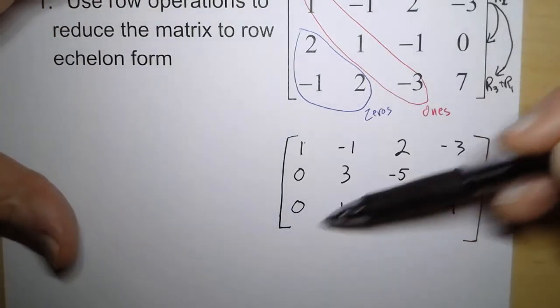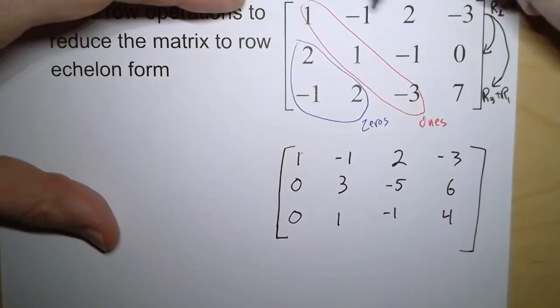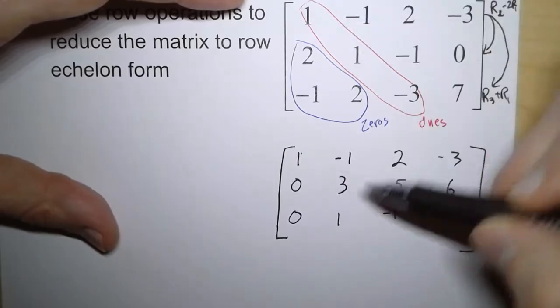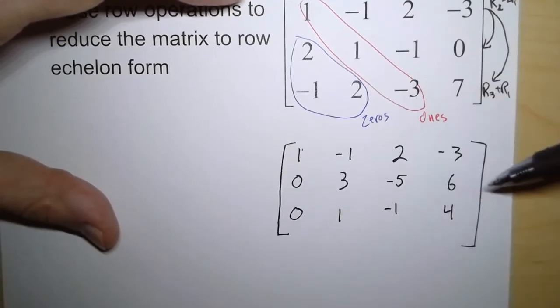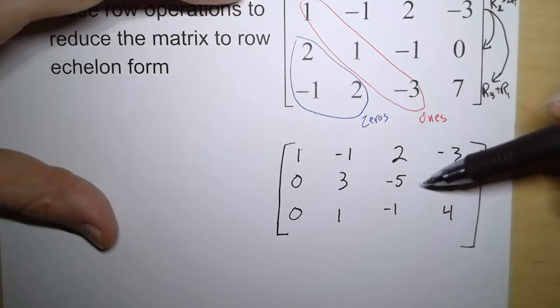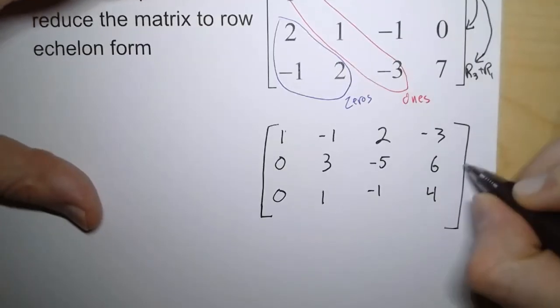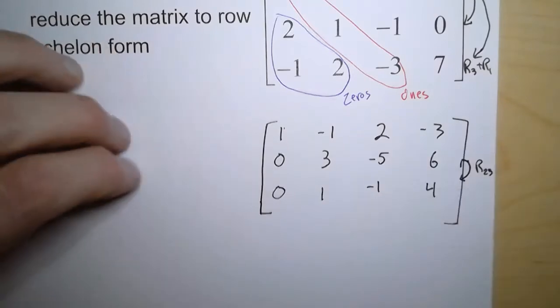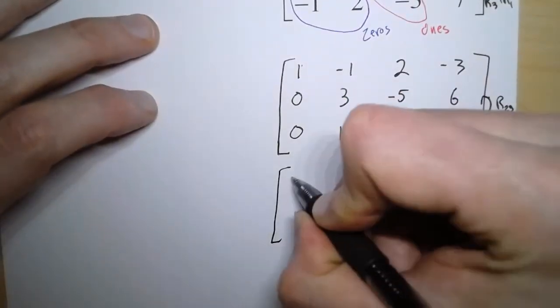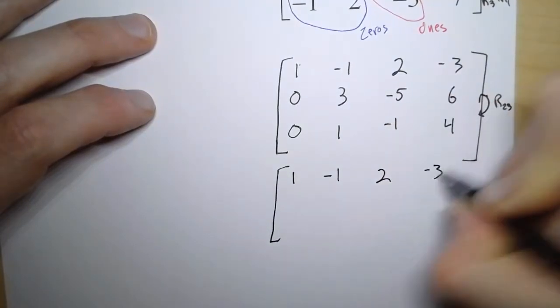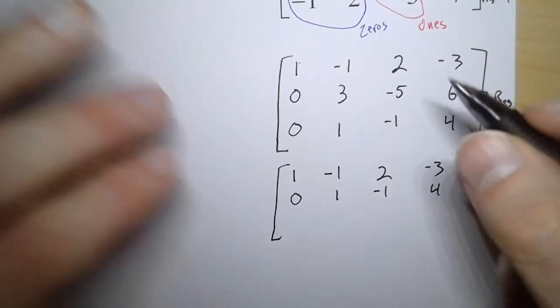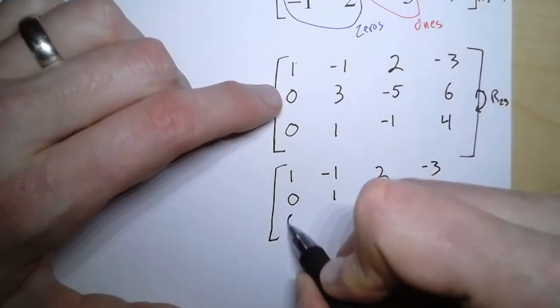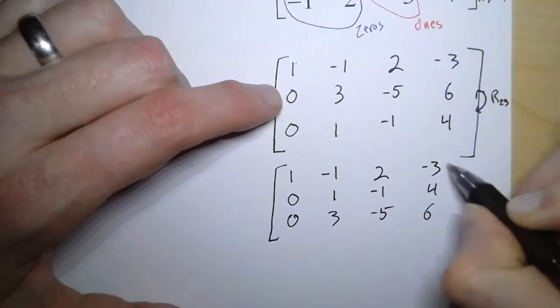Now we go over to the next column and we need this number to be a one. Right now it's not, it's a 3. We could multiply this row by one-third, but that's going to end up with some fractions. If you notice, this number is a 1. So what we can do is just switch these two rows. We can do an R2-3 and have them swap. So the first row doesn't move, but now the third row will be the second row and the second row will be the third row.